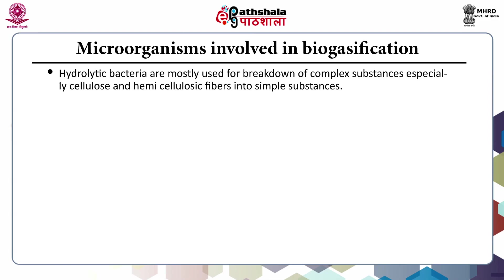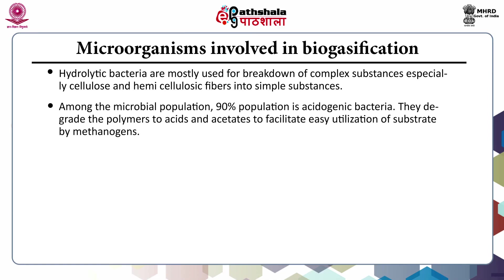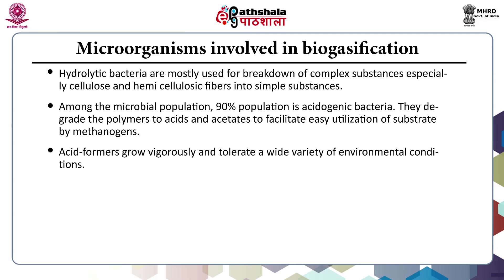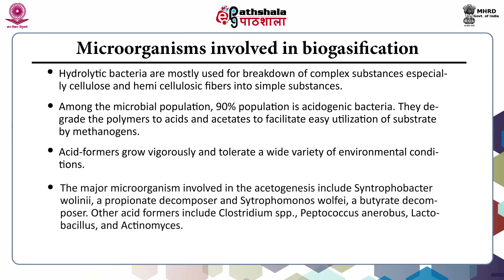The microorganisms involved in the process include hydrolytic bacteria, which break down complex substances — especially cellulose and hemicellulose — into simple substances. Among the microbial population, 90% are acetogenic bacteria. They degrade polymers to acids and acetates, facilitating easy utilization of substrate by methanogens. Acid formers grow vigorously and tolerate a wide variety of environmental conditions. The major microorganisms involved in acetogenesis include Syntrophobacter wolinii, a propionate decomposer, and Syntrophomonas wolfei, a butyrate decomposer. Other acid formers include Clostridium species, Peptococcus, Lactobacillus, and Actinomyces.